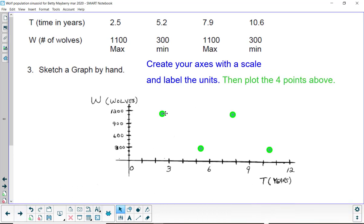Plotting the four points, they should look like this. About 2.5, 1100, 5.2, 300, 7.9, 1100, 10.6, 300. And now what we're going to do is get a sinusoid to go through those curves. Concave up and concave down.